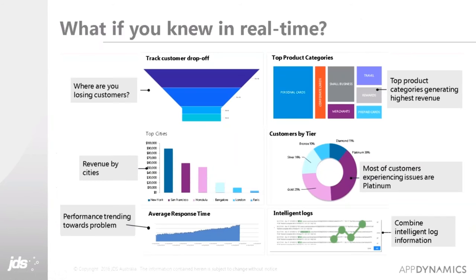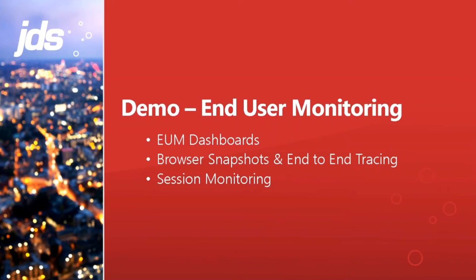And ultimately our key goal as AppDynamics partners is to help you make your customer experience great — improve it, maintain it, and ensure it's great all the time. We want to see in real time: where are we losing customers, how many are translating into sales, adding items to carts, actually checking out? What are the product categories, customer types, revenue breakdowns by city, device type, and version? And of course, understanding the performance and response times of your apps. So let me switch now to a demo in an actual AppDynamics environment.